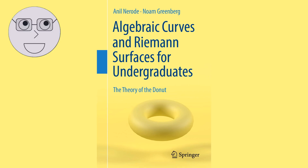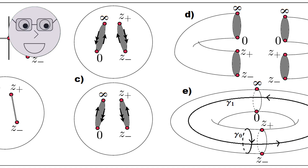Riemann surfaces have several important properties that make them unique. Firstly, they are compact, which means that they are finite in size and have no boundary. Secondly, they are connected, which means that any two points on the surface can be connected by a continuous path. The construction of Riemann surfaces involves gluing together complex planes or spheres in a specific way. This process is known as the Riemann surface construction.